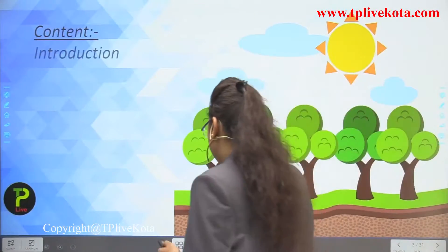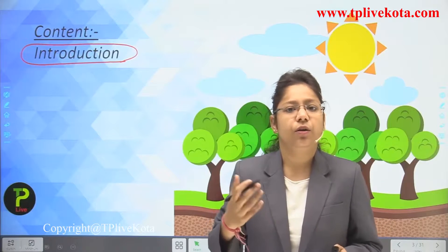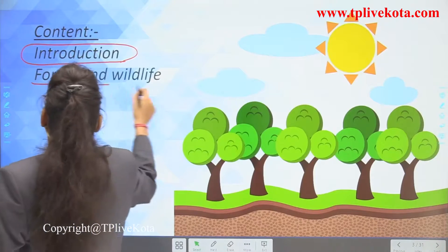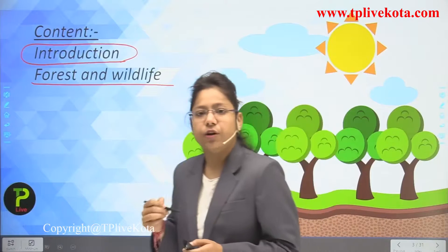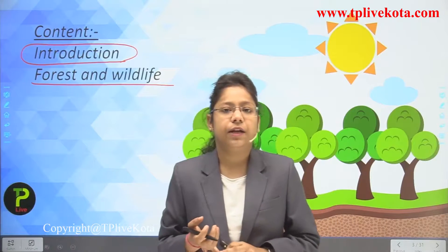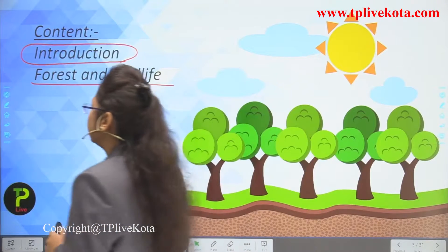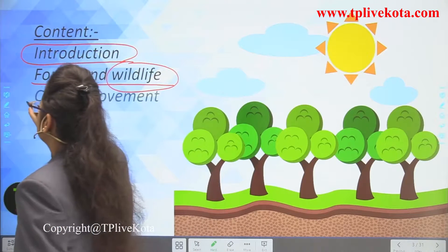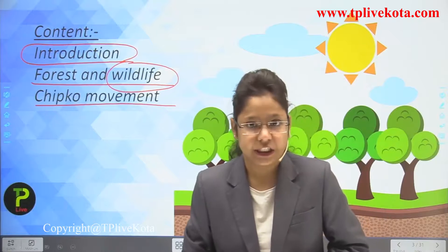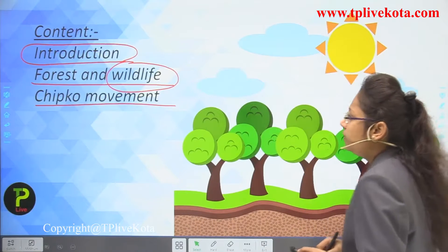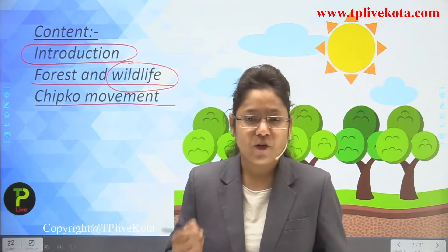Let us look at the content of this chapter. We will cover an introduction, then forest and wildlife. A forest is a place where microorganisms, trees, and wildlife are all present in a single environment. We will also learn about the Chipko Movement — the most famous movement for stopping deforestation — which was first organized in Uttarakhand and later came to Rajasthan, where Bishnoi communities opposed deforestation.